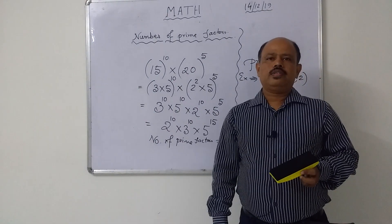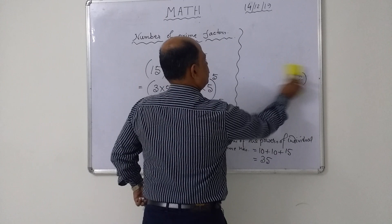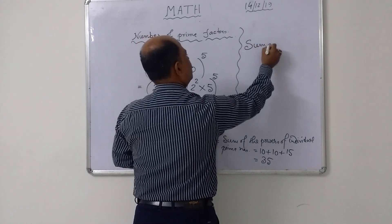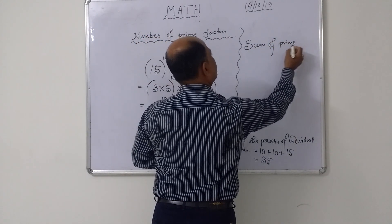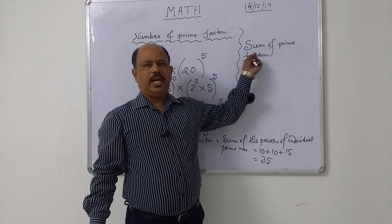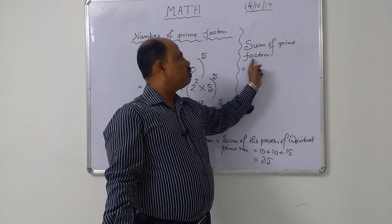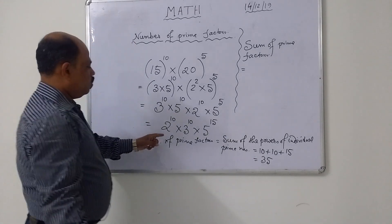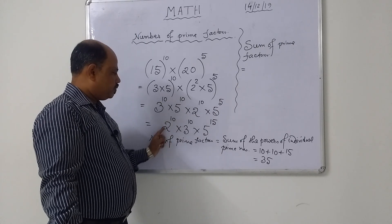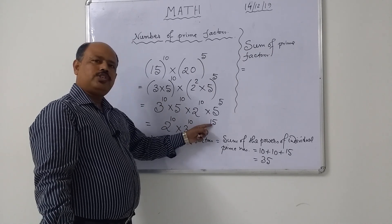Also find the sum of prime factors. Sum means addition of prime factors. How many twos are there? 10 times of 2. How many threes are there? 10 times of 3. How many fives are there? 15 times of 5.